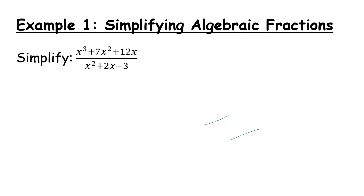In order to simplify we must first break it down into the building blocks to see if there is anything common above and below the line. This means we have to factorize both the top and the bottom line. The easiest way to do this is by separating out the lines, as it can become quite messy if you try to keep it in a fraction. The method I'm going to use is taking the top line, working with it, taking the bottom line, working with it, and then putting it back together at the end. So the top line is x to the power of 3 plus 7x squared plus 12x. If you were unsure about your factorization, there is a video uploaded which goes through all the different types.